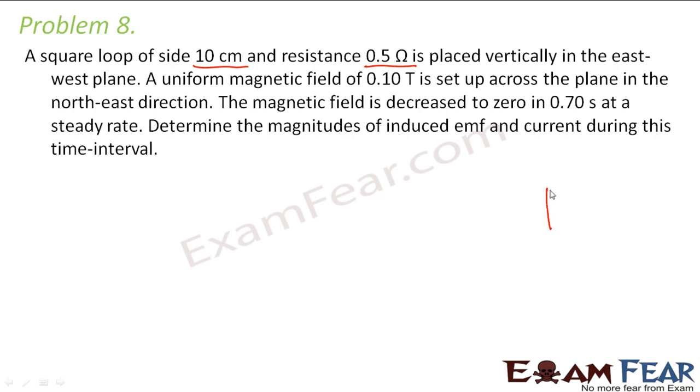So let us suppose this is my square loop. It is placed vertically in the east-west plane. A uniform magnetic field of 0.10 tesla. Let us say this is east, this is west, this is north and this is south. Now it says that a uniform magnetic field of 0.10 tesla is set up across the plane in the north-east direction. So that means the magnetic field is set up along this direction.